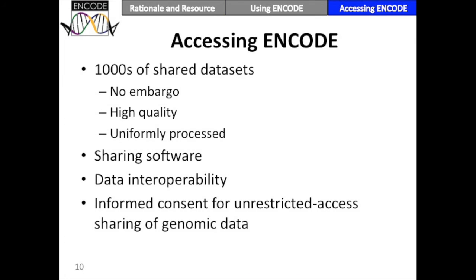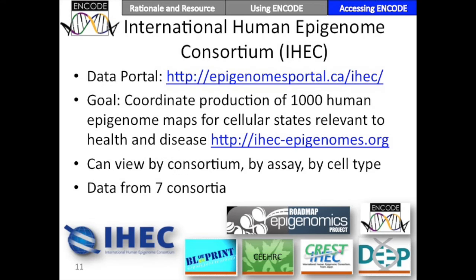ENCODE has released thousands of datasets and they're shared freely. They're available through the ENCODE portal at encodeproject.org — no login or controlled access required, available to everybody. We're also releasing software we've developed and sharing software that colleagues outside of ENCODE have found to be useful. We're working really hard to increase data interoperability, for instance working with Roadmap Epigenomics and other IHEC projects to try and standardize our interfaces and data.